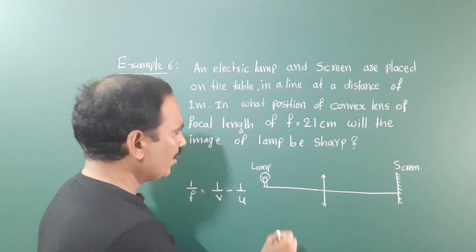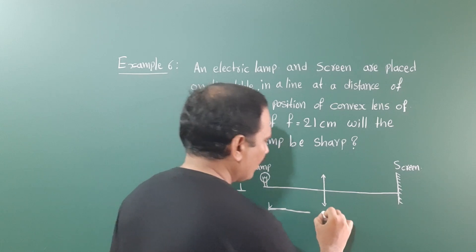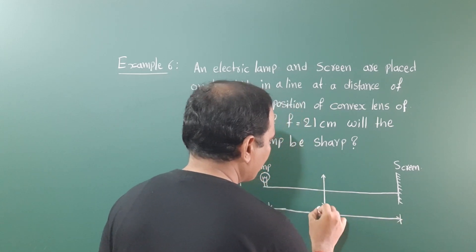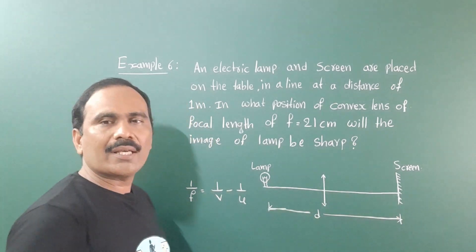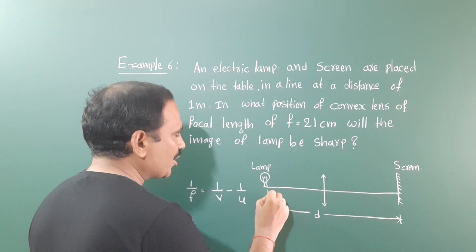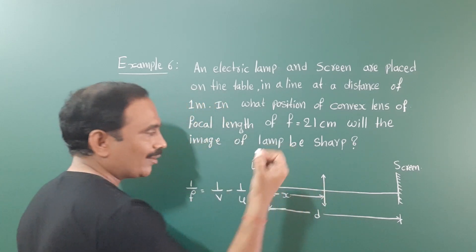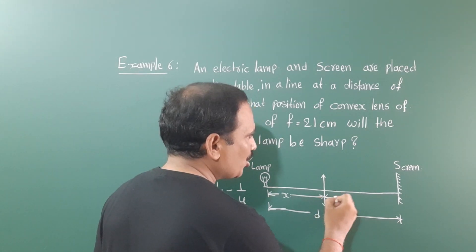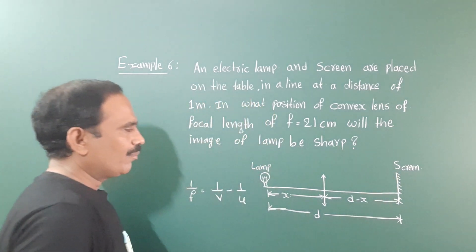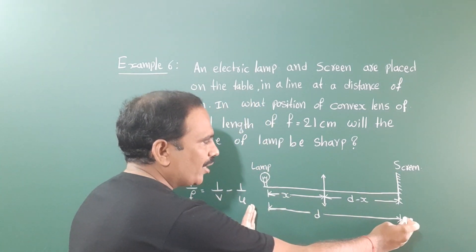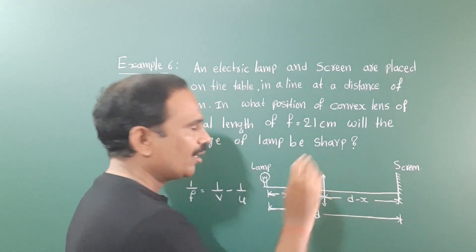Observe: the distance between the lamp and the screen, take it as d. The distance between the lamp and the lens is x. Then the distance between the lens and the screen is d minus x, because the total distance from lamp to screen is d. So lamp to lens is x, and lens to image is d minus x.